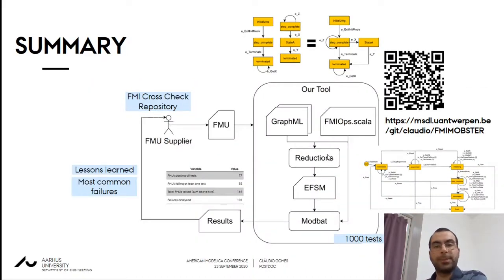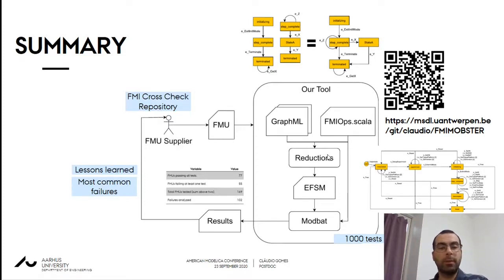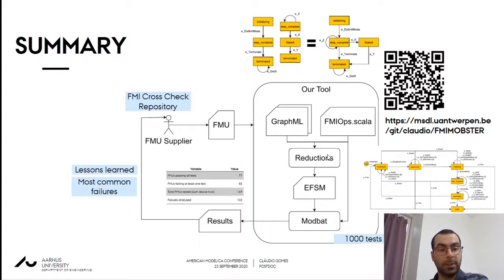To summarize, we developed a tool and a language to describe FMU testing scenarios, sitting on top of the model-based testing tool Modbat. Our tool can run with any FMU testing scenario as long as it can be described in our language, making it very flexible. We created a representation of the FMI state machine and tested real FMUs from the FMI cross-check repository. We hope that the common failures and lessons learned described here will make future iterations of FMUs better and improve adoption of the FMI standard.